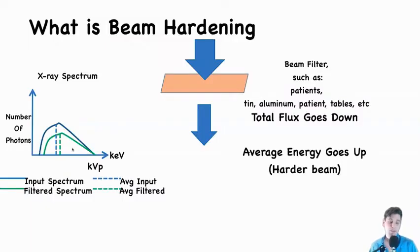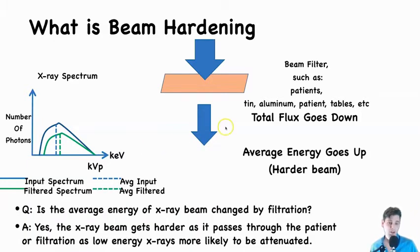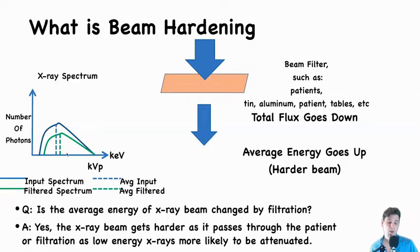That is what we mean by beam hardening: total flux goes down, but average energy goes up.